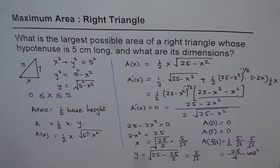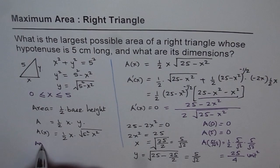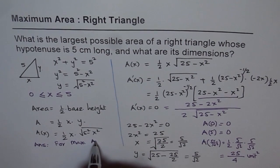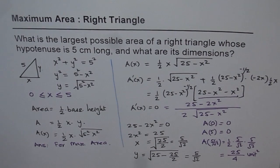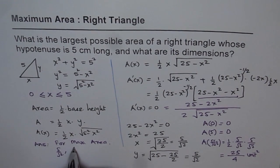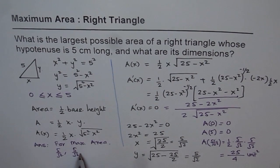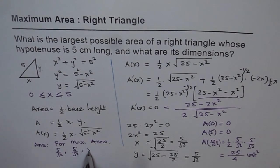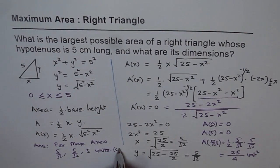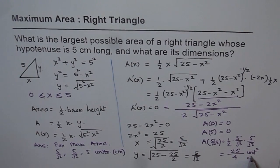Since 25/4 is greater than 0, this is the maximum area. The dimensions are: base equals 5 over root 2 centimeters, height equals 5 over root 2 centimeters, and hypotenuse equals 5 centimeters. The maximum area is 25/4 centimeters squared.